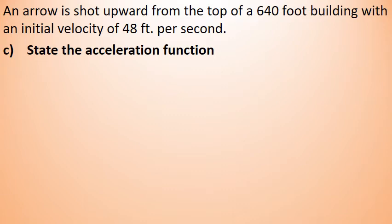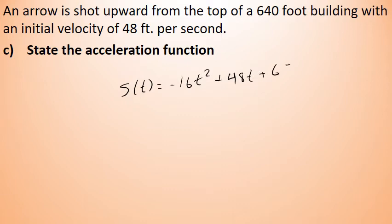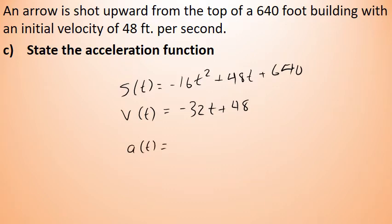Part C asks for the acceleration function. The acceleration function is based on the position and velocity functions from Parts A and B. We started with position s(t) = negative 16t squared plus 48t plus 640, and found the velocity function v(t) = negative 32t plus 48. Acceleration is the change in velocity with respect to time, so we differentiate the velocity function. The derivative of negative 32t plus 48 is negative 32. The acceleration of this arrow is constant — essentially only the effect of gravity.